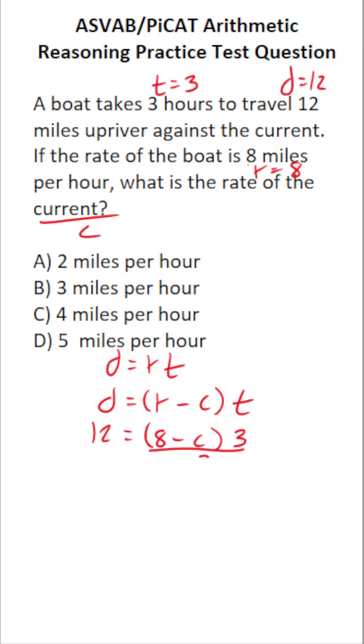Let's start by dividing both sides of this equation by three. In doing so, this crosses out, leaving you with eight minus C over here. Twelve divided by three is four.